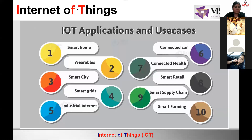You will find IoT applications in each and every field, whether it's medical, commerce, civil, mechanical, pharmacist, or law — every field has IoT applications. Today the technology has become multifaceted. There are about 10 applications: smart home, wearable devices, smart cities, smart grids, industrial internet, connected cars, connected health, smart retail, and supply chain. Just think about how many IoT devices are nearby you — you can easily list five to seven devices at your place.